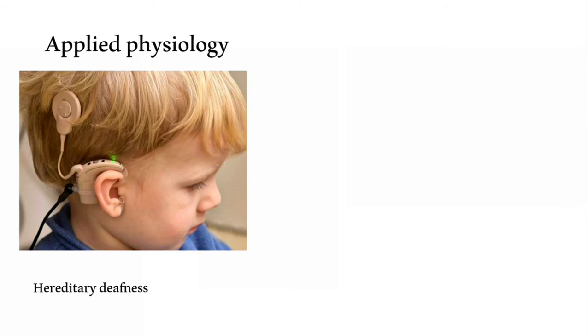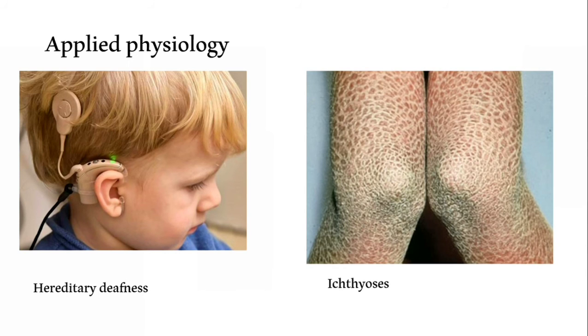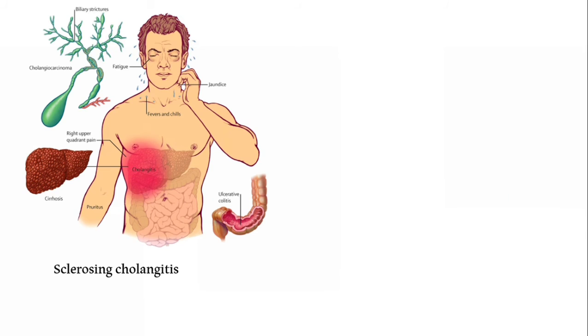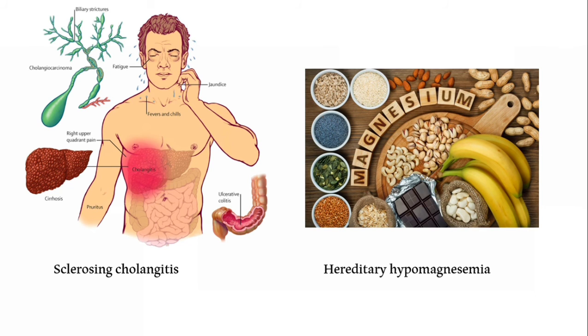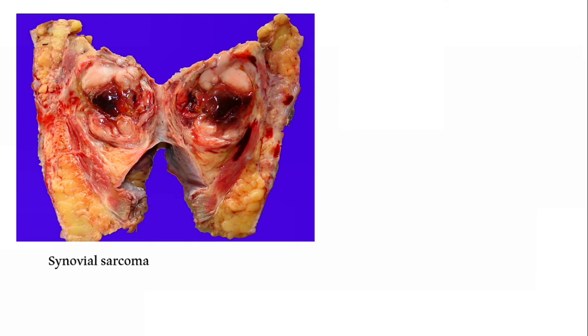Now what are the different diseases which are caused by mutation of this tight junction? First one is hereditary deafness. Then there is a scaly skin condition called ichthyosis. Then another condition where there is sclerosis of the biliary duct resulting in strictures caused by inflammation which is called sclerosing cholangitis. Then hereditary deficiency in magnesium can also be caused by mutation in tight junctions. Finally, a very deadly sarcoma that is a soft tissue cancer seen in the body, that is synovial sarcoma.